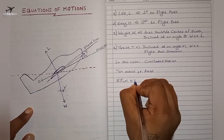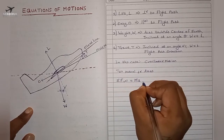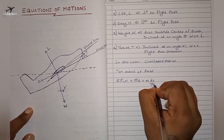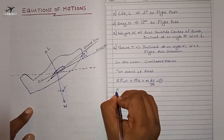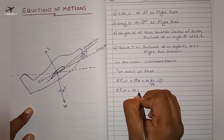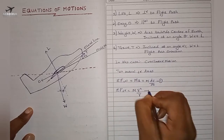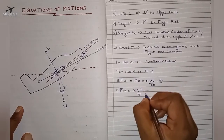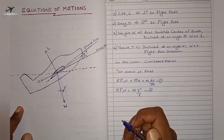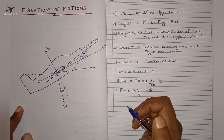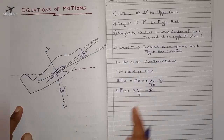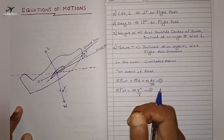The summation of forces parallel to the flight path equals m times a, which is Newton's second law — giving us m times dv/dt. This is equation number one. The summation of forces perpendicular to the flight path equals m times v² divided by r, which is the centrifugal force — the force acting outward along a curved path.